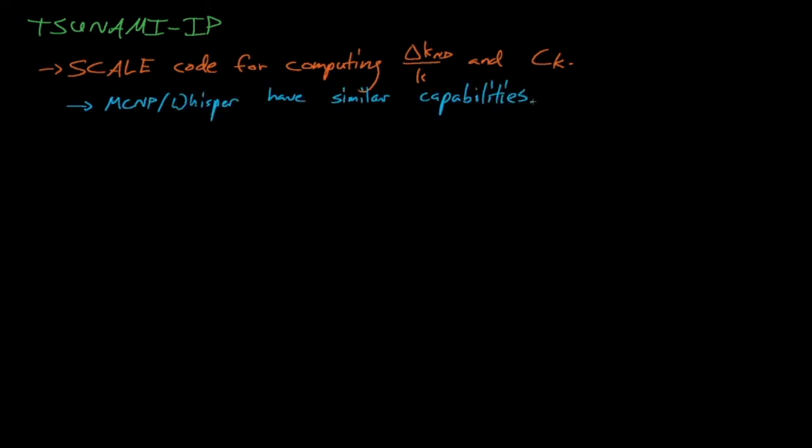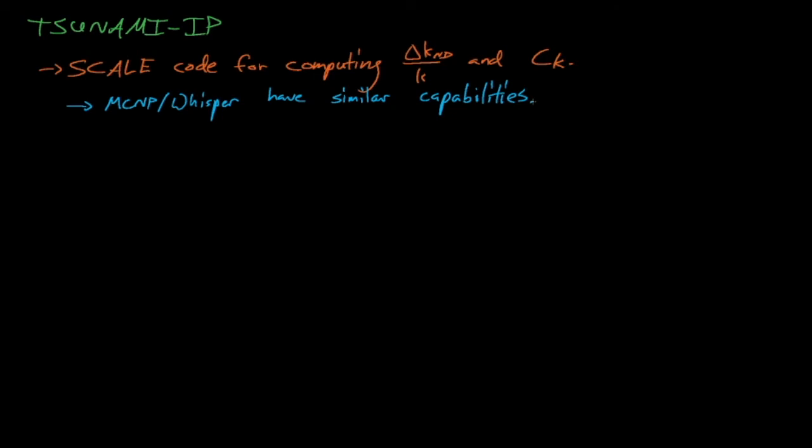The tsunami IP code's input is actually fairly simple. Like all scale codes, it starts with equals the sequence name in the first line, and the working title for the input in the second line. From here, we dive into the calculation parameters for the similarity analysis.